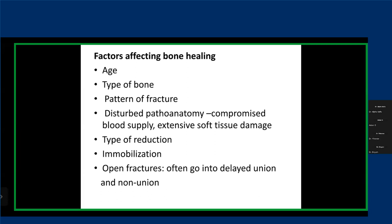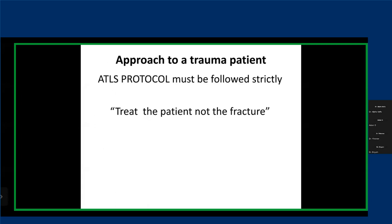Primary direct bone healing is not very common. Essentially there will be cutting cones — no callus, no chondroblasts involved — because the strain is so low that osteoblasts are able to build new bone between those two fractured sites without requiring the bridging of a callus. Open fractures universally heal much slower than closed fractures. Non-unions are common for open fractures. Open fractures are a risk for multiple complications.